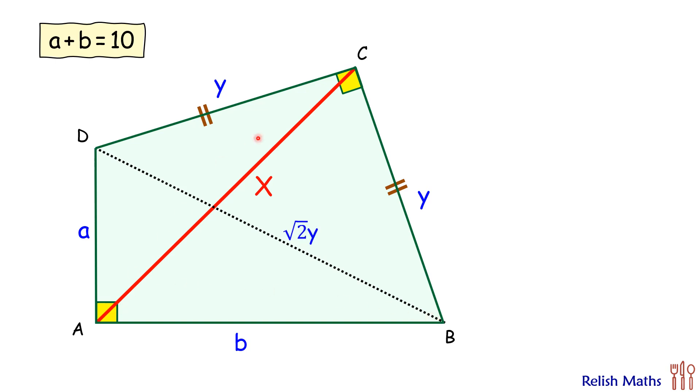Now angle A plus angle C equals 180, and in a quadrilateral, if opposite angles are supplementary, then it's a cyclic quadrilateral.